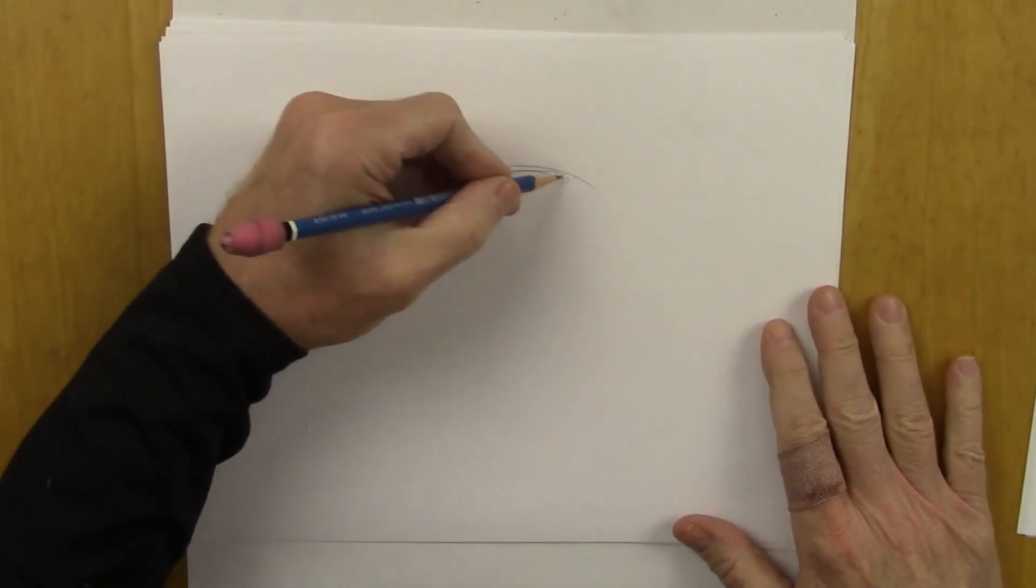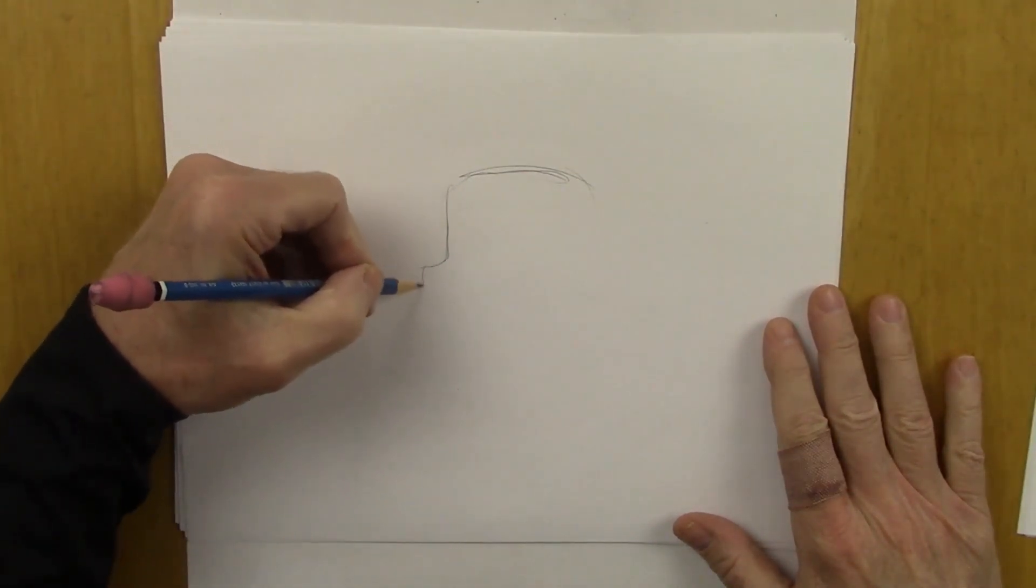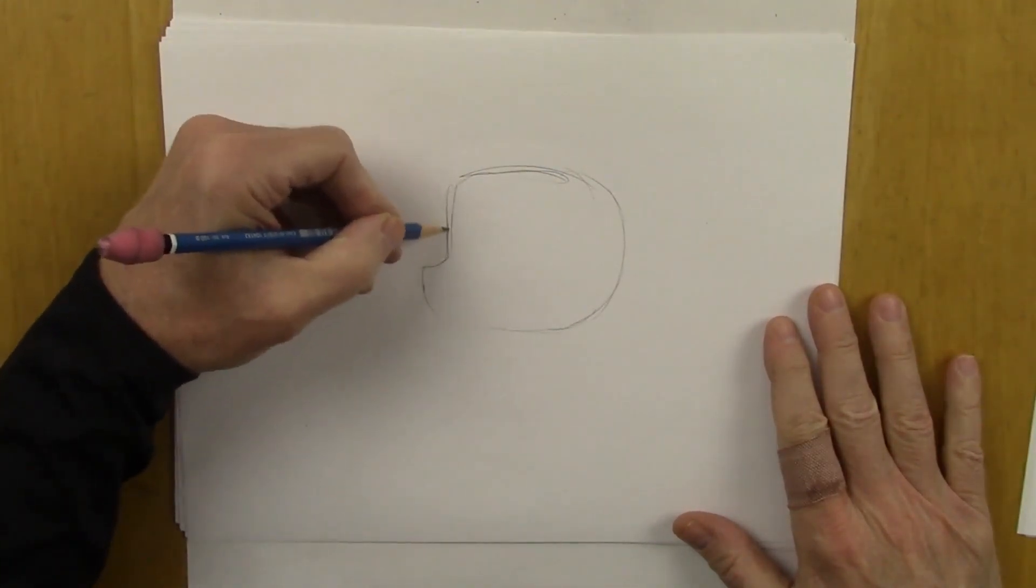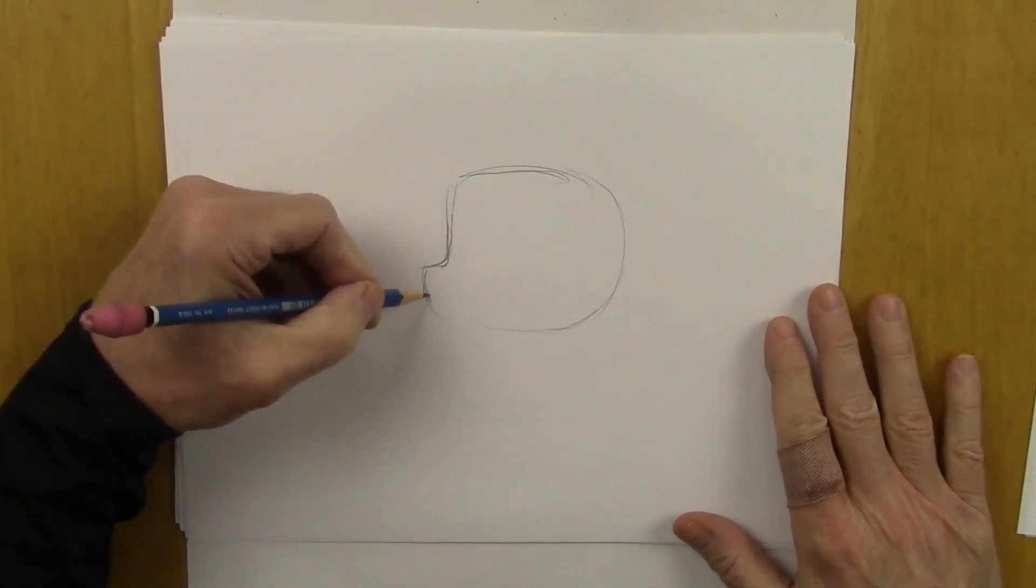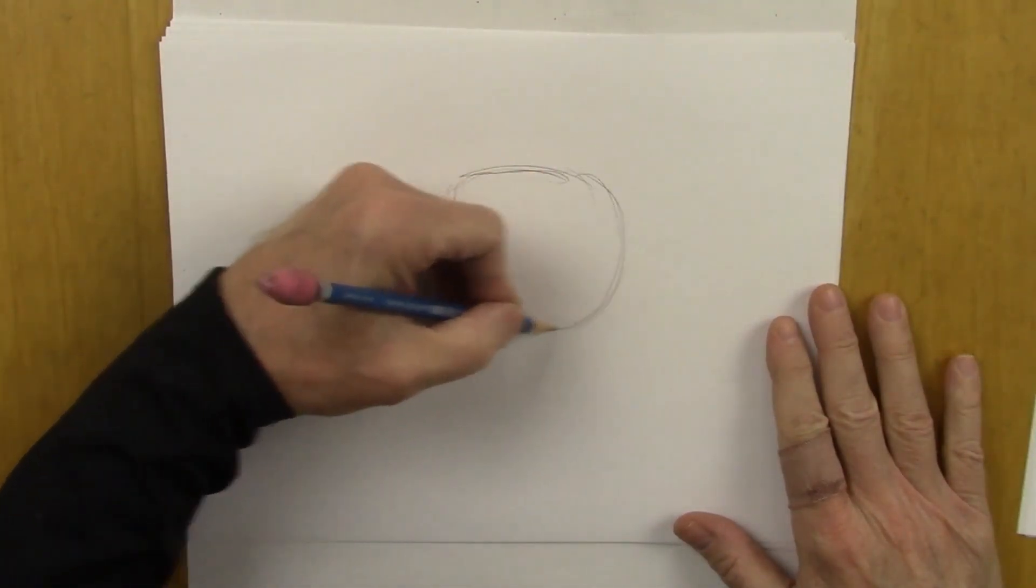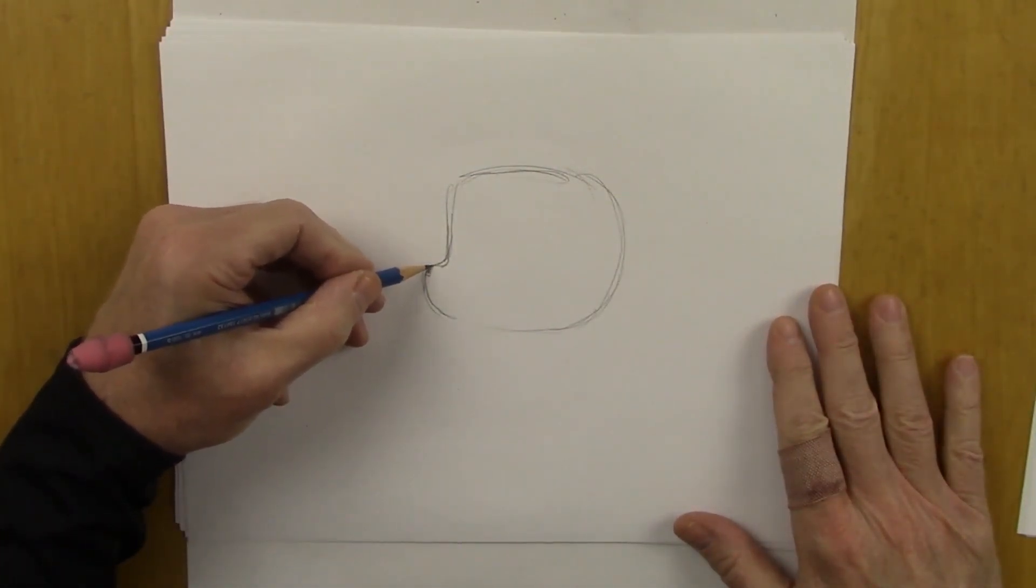Okay, so first, we're going to draw this shape for the head. It's kind of a squarish shape, but the bottom pokes out. That's because it's going to be a bunny's head. And here is the nose, right here.